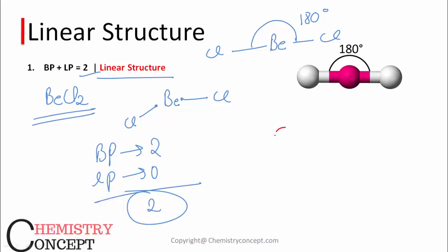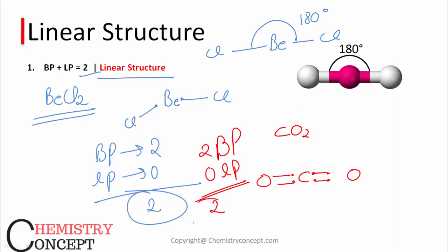Similarly, for carbon dioxide: carbon has 4 electrons in its valence shell and forms two double bonds with two oxygen atoms, so there is no lone pair. As per the last postulate of VSEPR theory, multiple bonds are considered as a single pair of electrons. So it is 2 bond pairs and 0 lone pairs — sum is 2 — and the structure is again linear with a 180-degree bond angle.